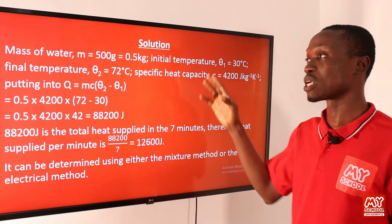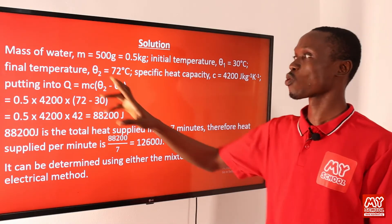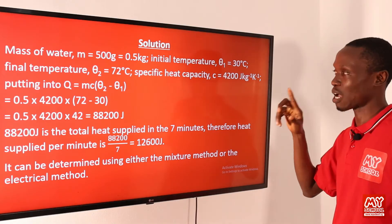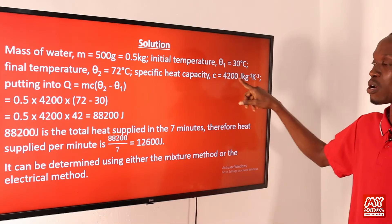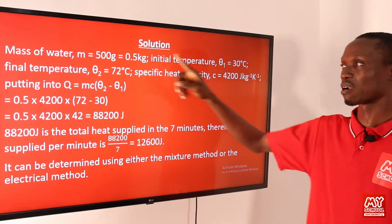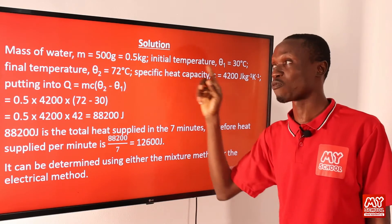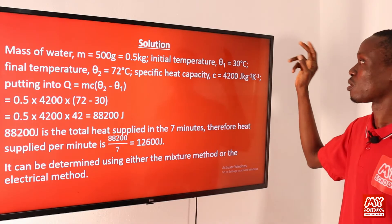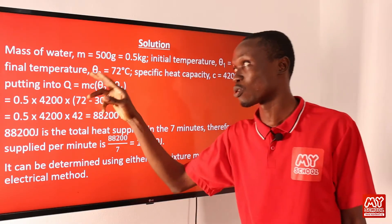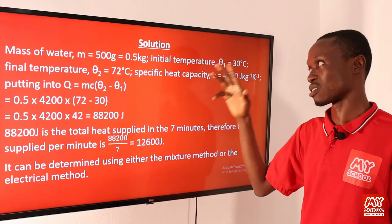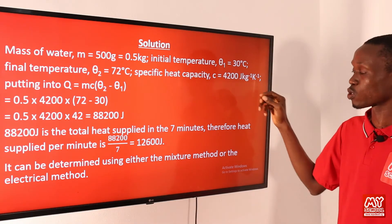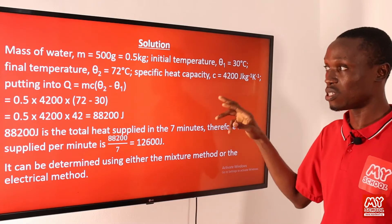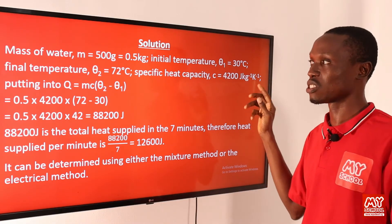The first step is to identify the parameters given. The mass of water is 500 grams, but since the specific heat capacity is in joules per kilogram, we need to convert: 500 g = 0.5 kg. The initial temperature θ₁ = 30°C, the final temperature θ₂ = 72°C, and the specific heat capacity of water c = 4200 J/kg/K.